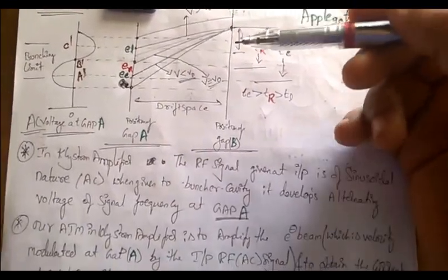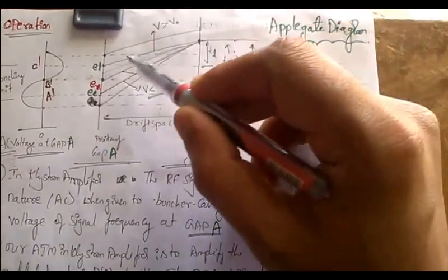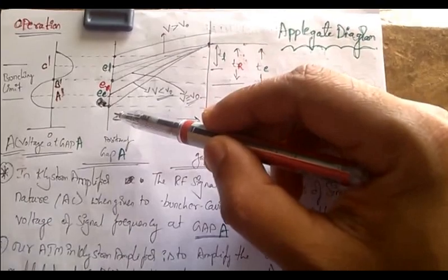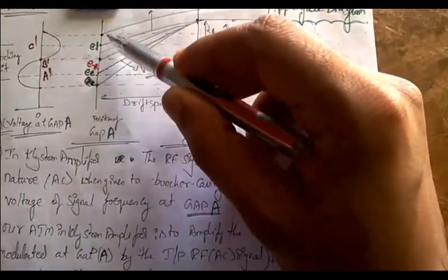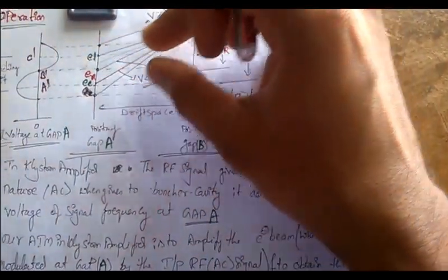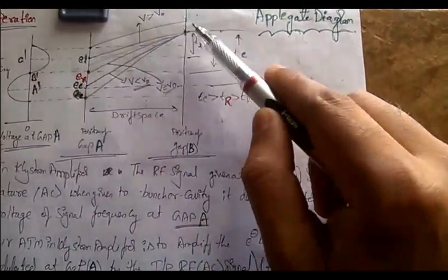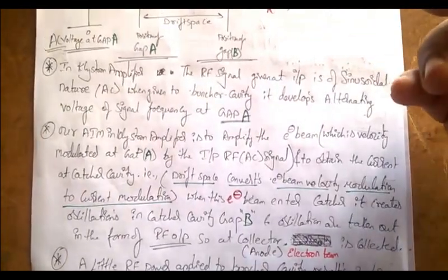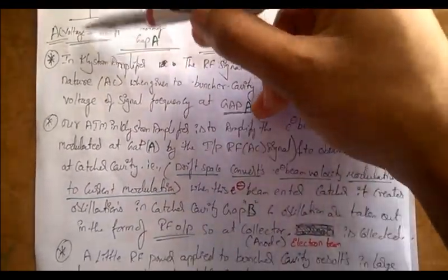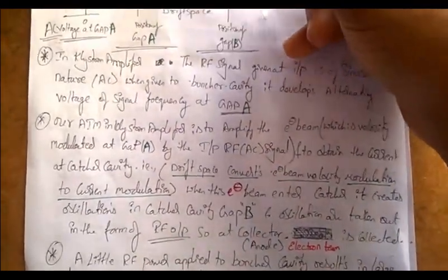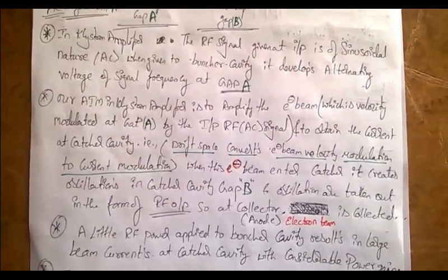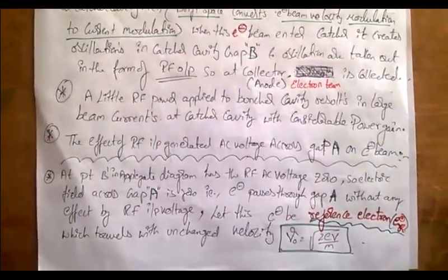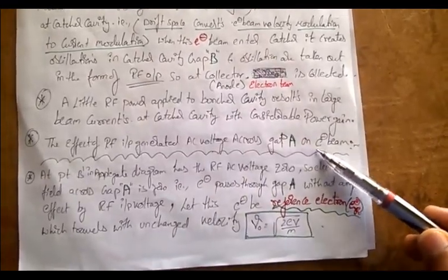B-dash is considered for the reference electron, C-dash for the late electron, and A-dash for the early electron. The bunching spot is where at last all three electrons — late, early, and reference — get bunched together when we get the output. Velocity modulation causes the electron beam to get bunched, and bunching means we receive the full strength at the output.